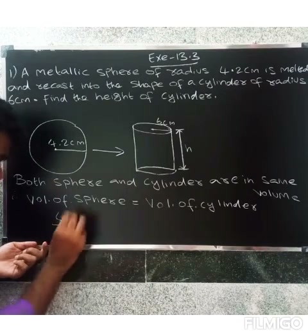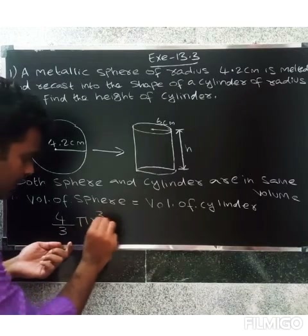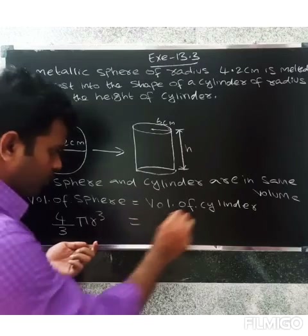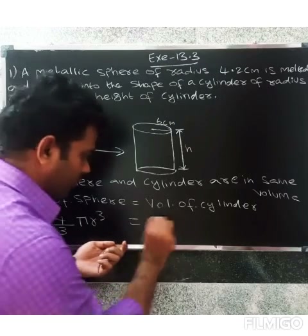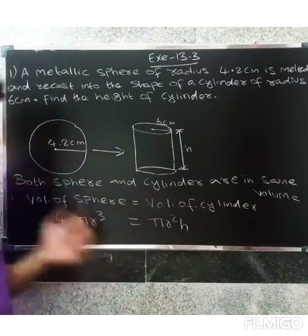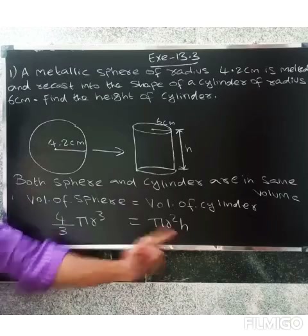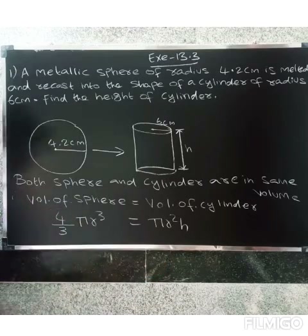Volume of sphere equals 4/3 π r³, and volume of cylinder equals π r² h. We will substitute the values to find the height.